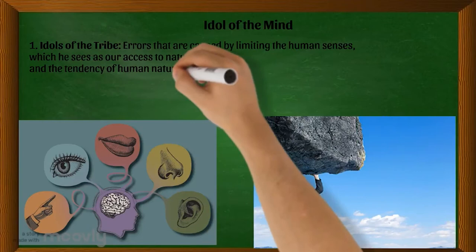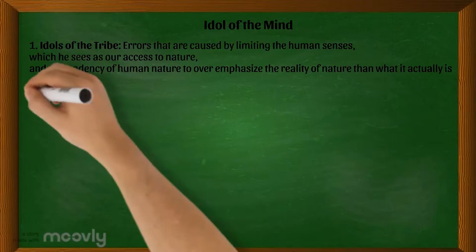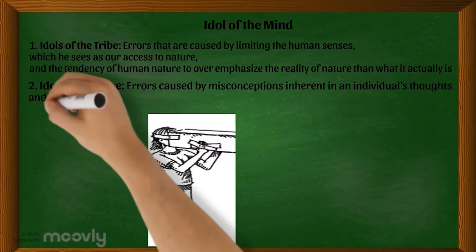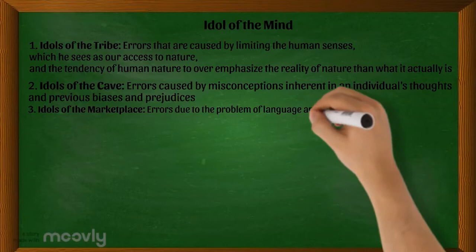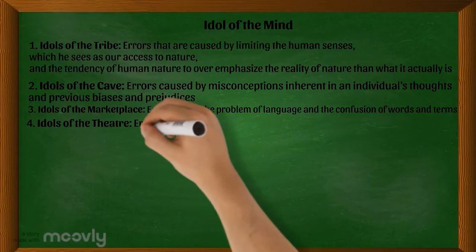Second, Idols of the Cave: errors caused by misconceptions inherent in an individual's thoughts and previous biases and prejudices. Third, Idols of the Marketplace: errors due to the problem of language and the confusion of words and terms. Fourth and lastly, Idols of the Theater: errors that arise from received systems of thought passed down by past thinkers, such as the Aristotelian methods of syllogistic argumentation.